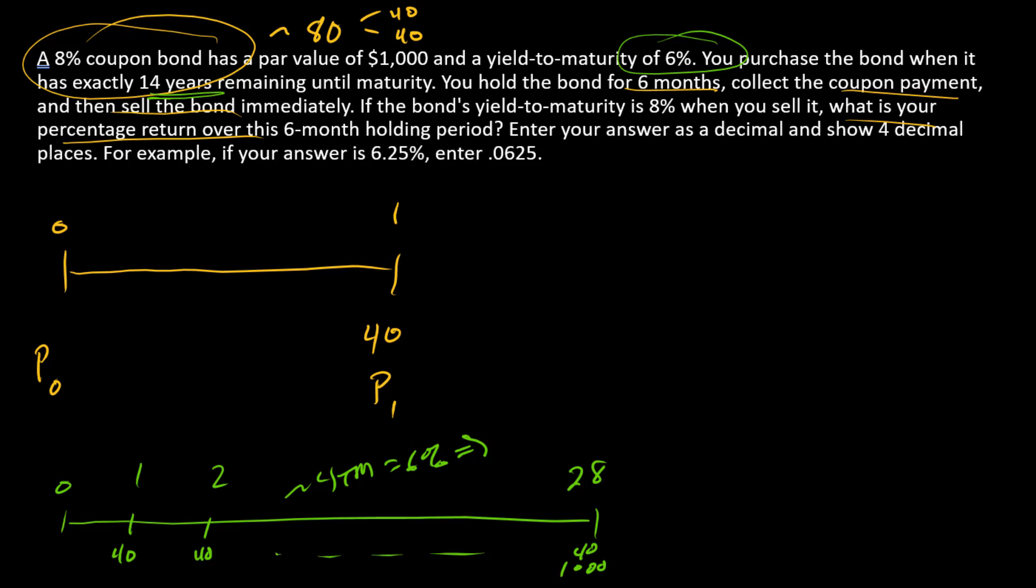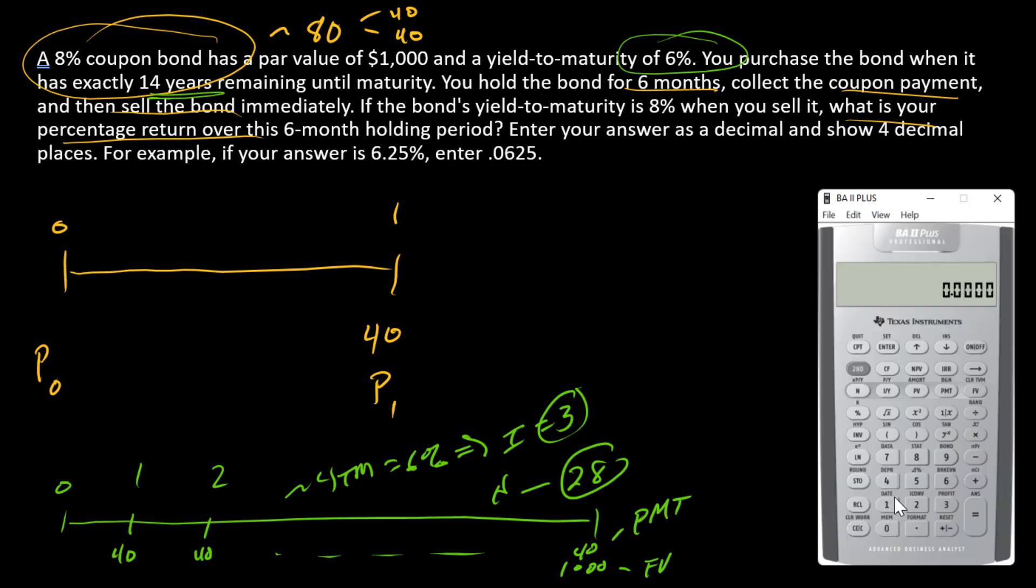The yield to maturity is 6%, and so that gives us a semi-annual discount rate of 3%. We're going into our financial calculator. There's I=3, N=28, FV=$1,000, and PMT=$40. I'm going to enter 1000 as FV, 40 as PMT, 3 as I, and 28 as N, compute PV, and so there's my initial price.